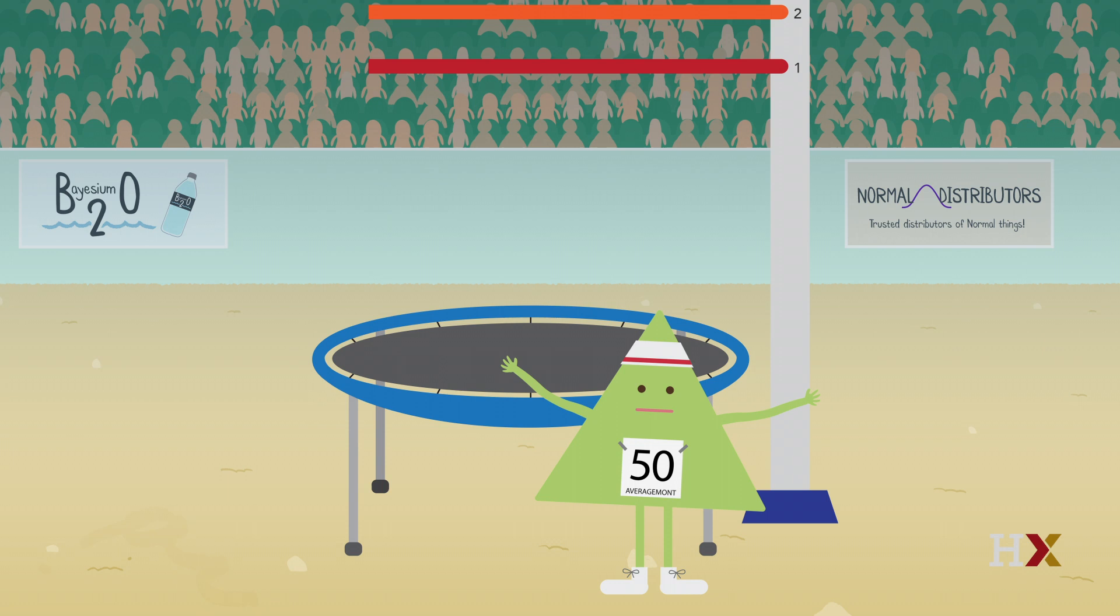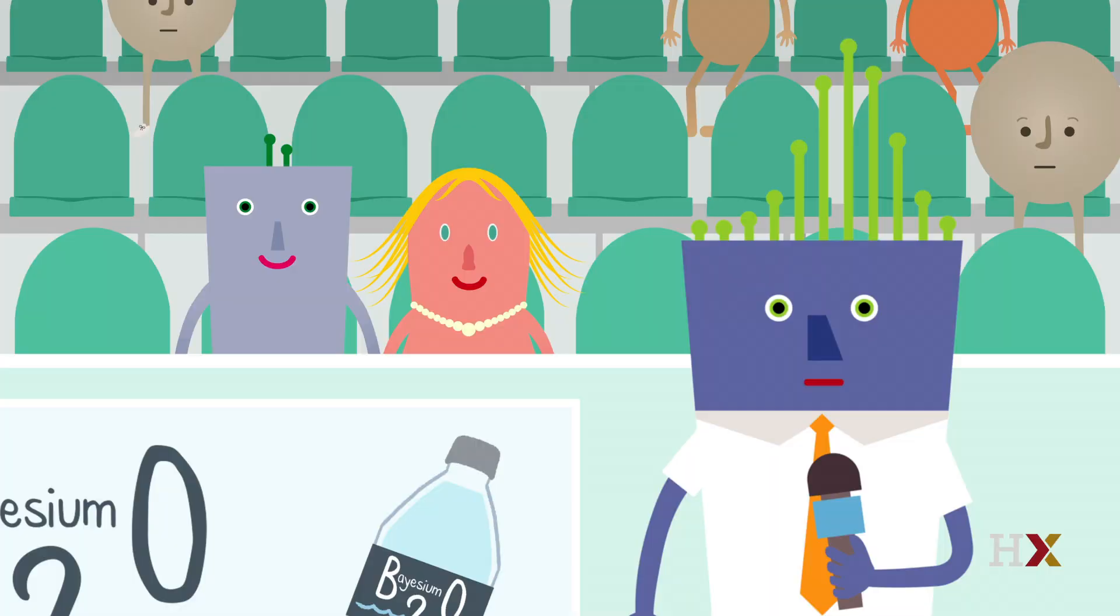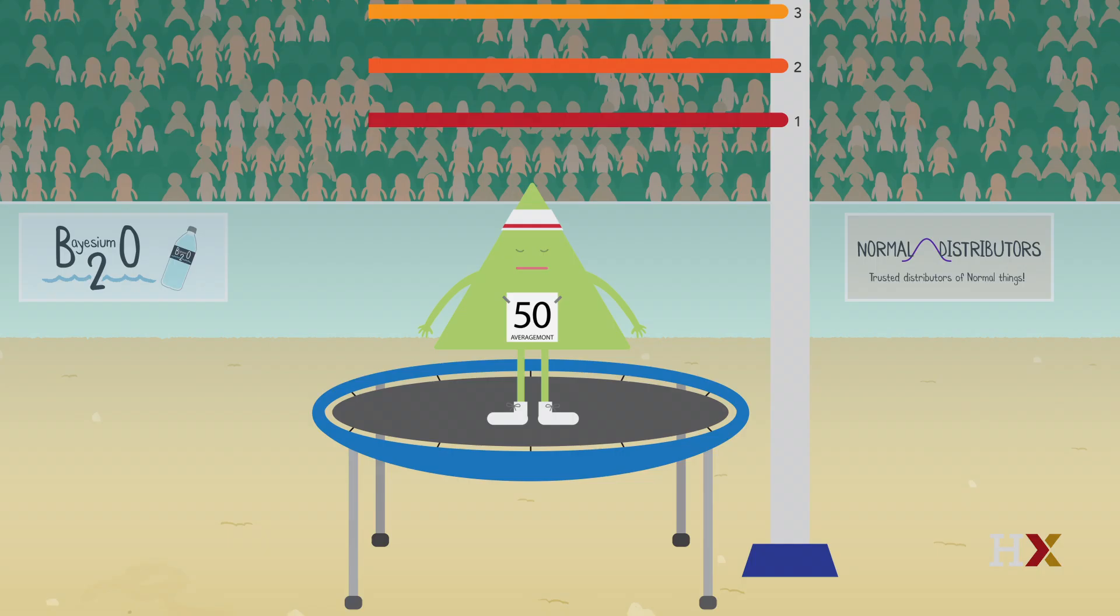This is Drew Benhair reporting live from the Statland Games and Average Monty. The final round of the X-Bar competition is about to begin. The hometown favorite, John Smith, has overcome incredible odds to be here today. He's the first Average Monty ever to reach the final round of an event at the Statland Games.